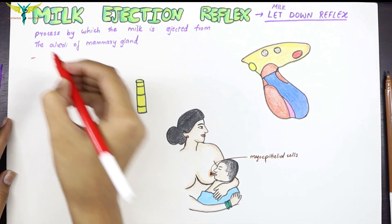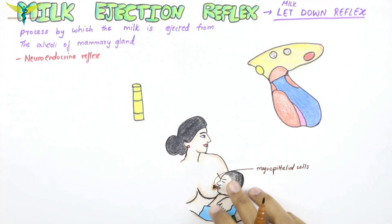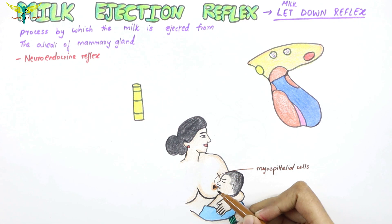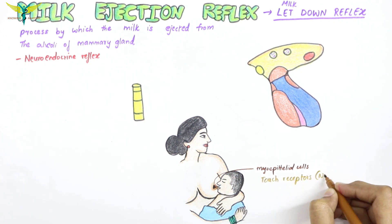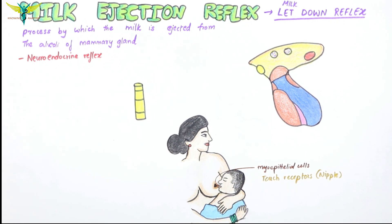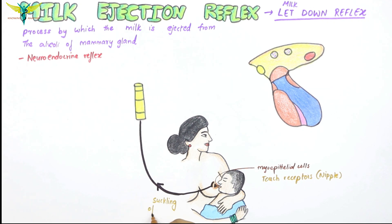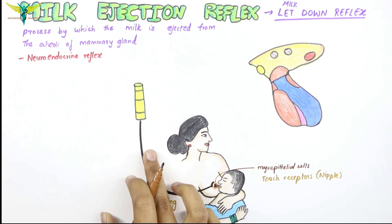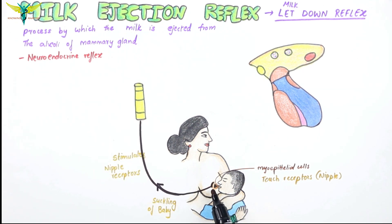This reflex is a neuroendocrine reflex. Plenty of touch receptors are present on the mammary glands, mainly concentrated at the nipple area. When the infant suckles the mother's nipple, the touch receptors present in the nipple get stimulated. So the suckling of the baby causes stimulation of the receptors in the nipple.